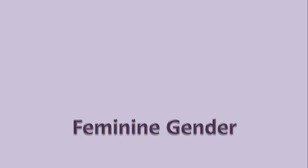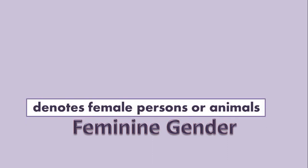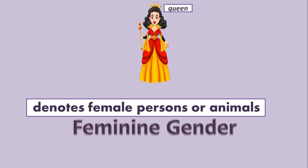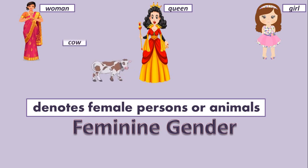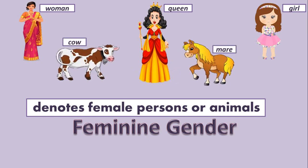Similarly, feminine gender. Feminine gender denotes female persons or animals. That means a noun that is the name of a female person or animal is said to be feminine gender. For example: queen, woman, girl, cow, and mare.